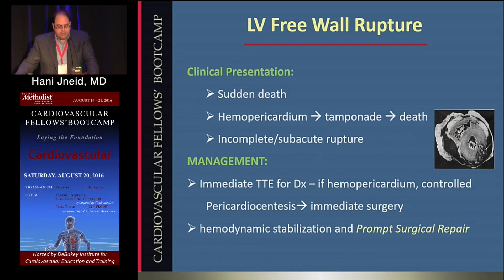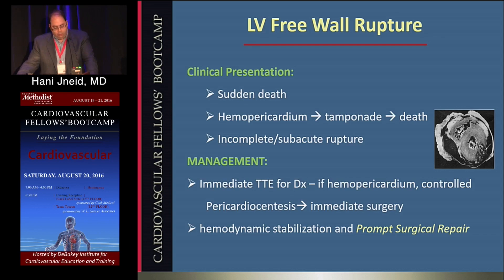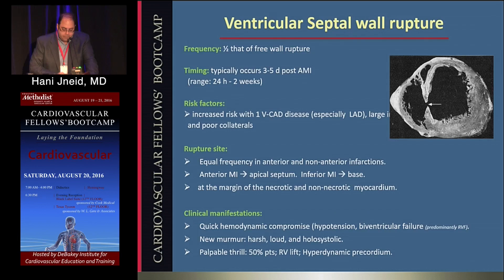The clinical presentation can be one of three: sudden death, hemopericardium with tamponade leading to death, and incomplete or subacute rupture. This last scenario represents the 30-40% of cases where you can potentially salvage patients. Management includes an immediate echocardiogram, and if there's hemopericardium, controlled pericardiocentesis with immediate surgery along with hemodynamic stabilization using vasopressors, and most importantly, prompt surgical repair.